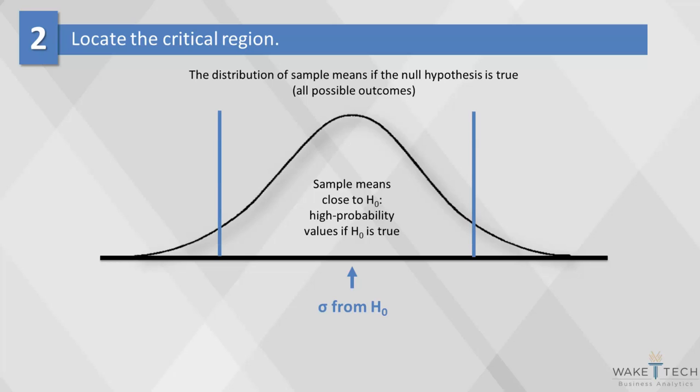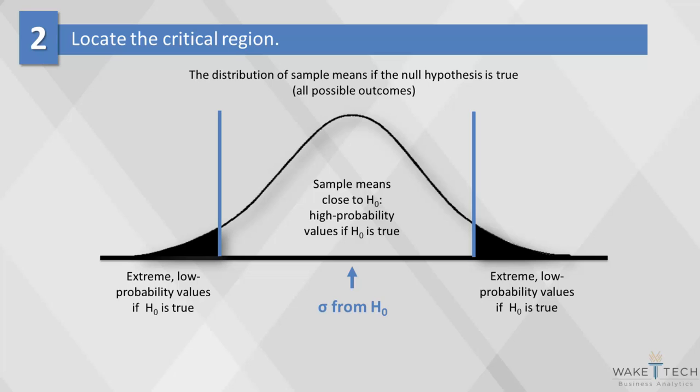When we're estimating population parameters using a sample, we have to determine the cutoff values. These cutoff values are called alpha. If we decide that we want to measure the mean with a 90% precision level, then the shaded area on the left and right will be larger. If we want to measure with a 1% precision, then the area will be smaller and the range will be larger.